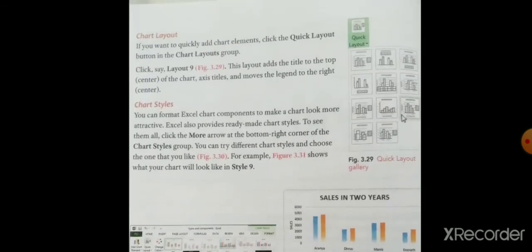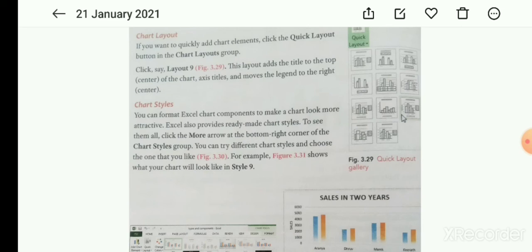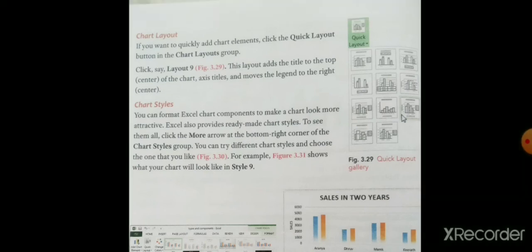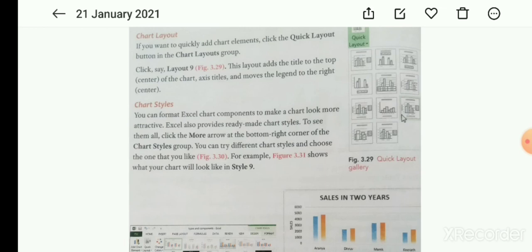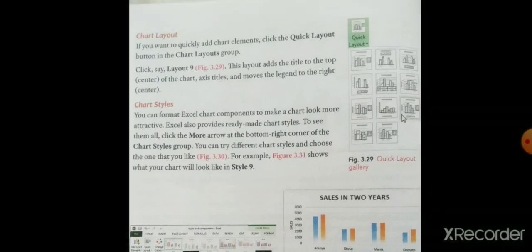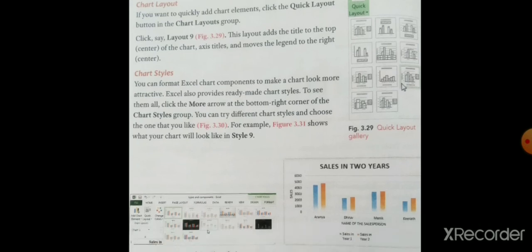If you want to quickly add chart elements, click the Quick Layout button in the Chart Layout group. This layout adds the title to the top center of the chart, axis titles, and moves the legend to the right center.